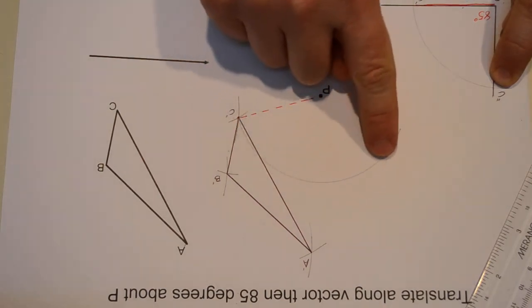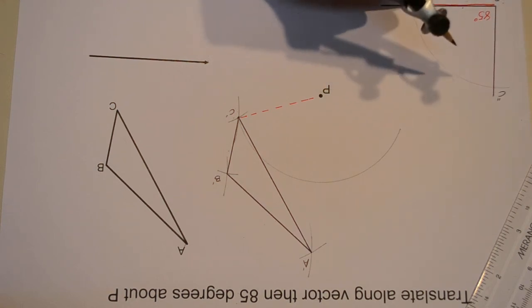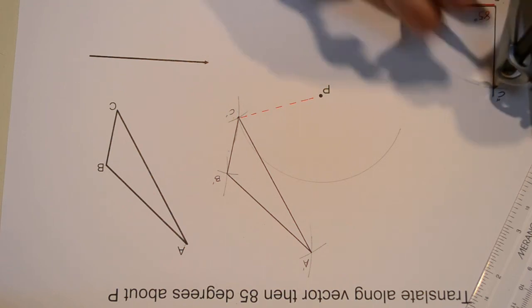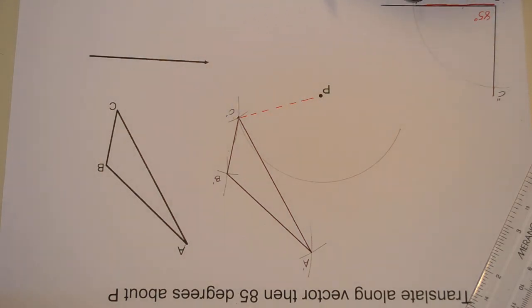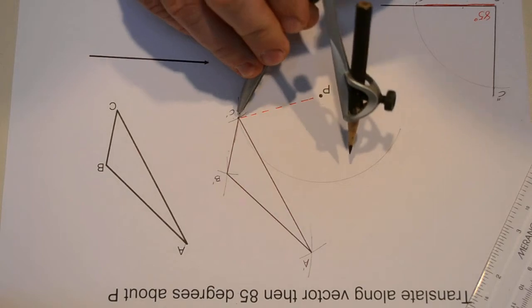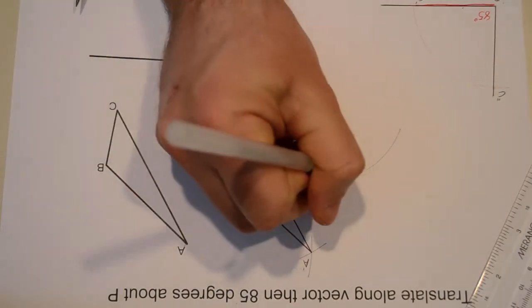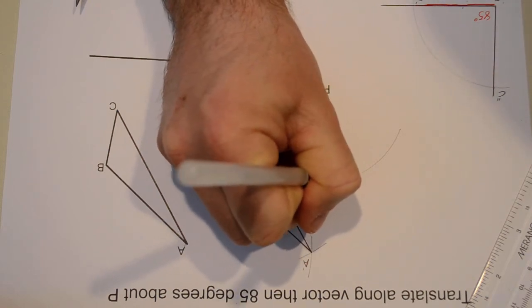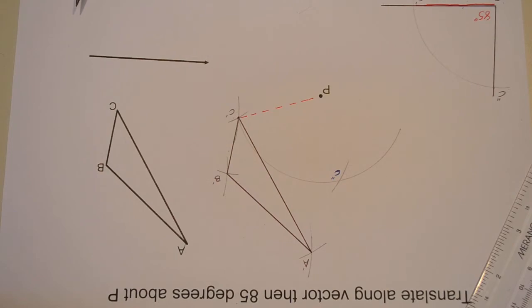Well, again, I know C double prime has to be on that arc somewhere. All I need is a second distance. This triangle is going to give me that distance. C prime and C double prime have to be that far apart if I'm going to rotate 85 degrees. So I'm just going to take that distance, and I'm going to bring my compass from C prime here to C prime there. And I'm going to use this to locate my C double prime. So right there is point C double prime. Go ahead and label that one. And I now have a foothold into this final triangle that we're going to end up with.